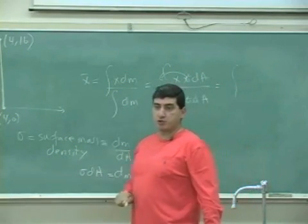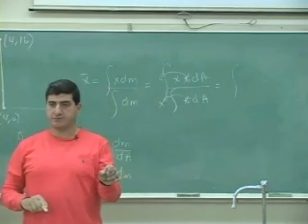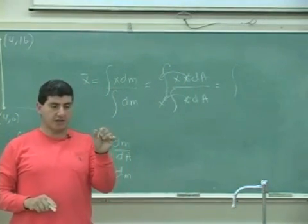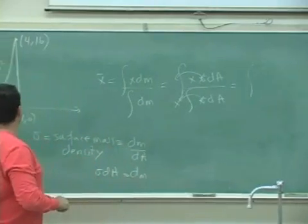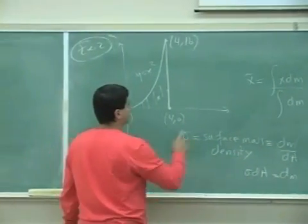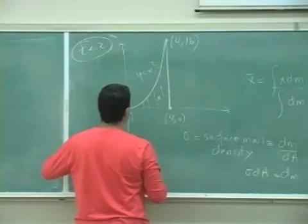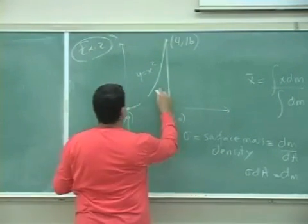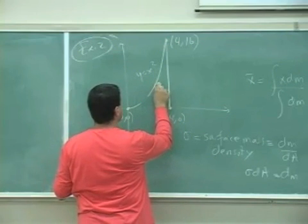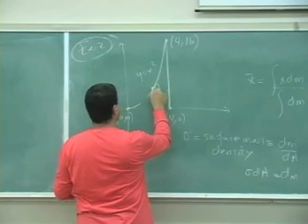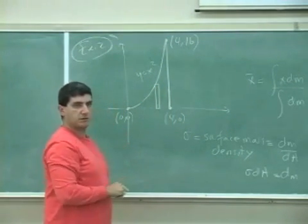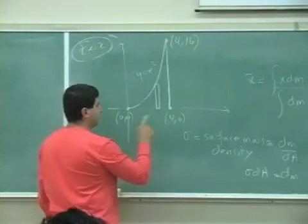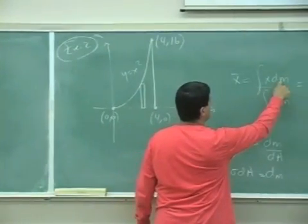Then I want to choose an appropriate dA, an area element. Now, to do x center of mass, here is the dA that I have to choose. I have to choose a vertical rectangle.